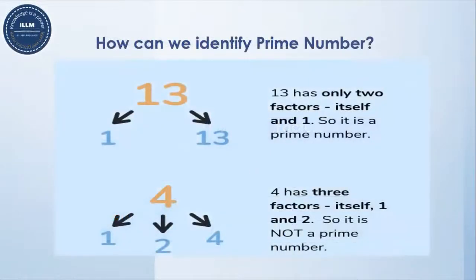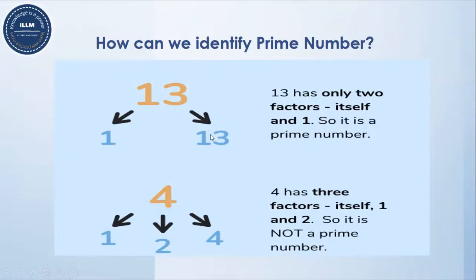How can we identify prime numbers? Let's have a look at 13. Thirteen is having two factors: one and thirteen. Thirteen is divisible by one, and thirteen is divisible by itself — meaning 13 only. So 13 is called a prime number.